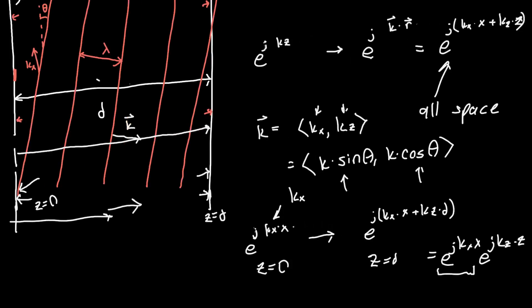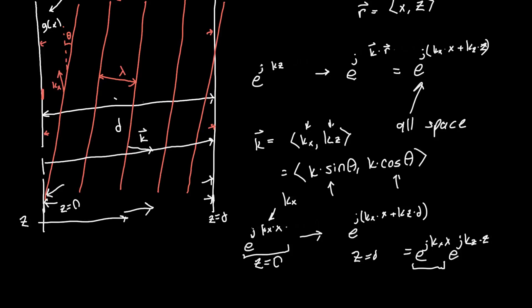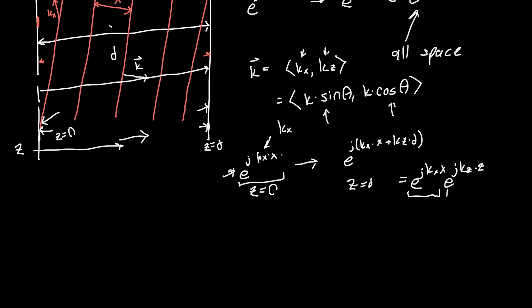which we can see over here. This was our original plane wave, this e to the j kx x term. So we can write our transfer function, or the thing that you need to multiply to get the output plane wave, is just this. It's e to the h is just e to the j, kz times z. That's it.